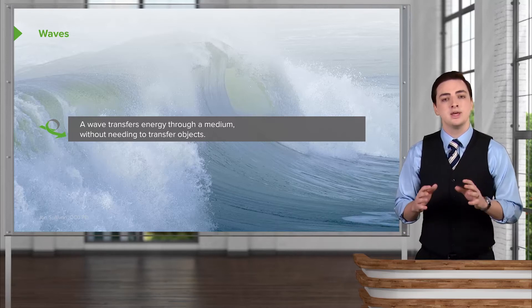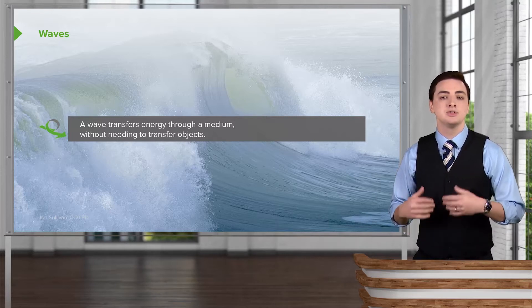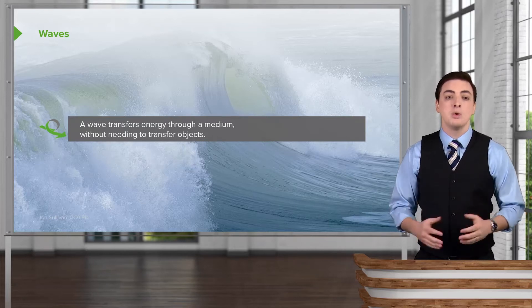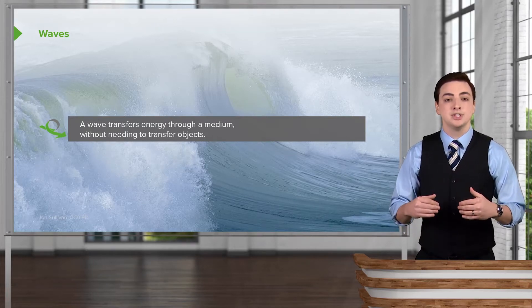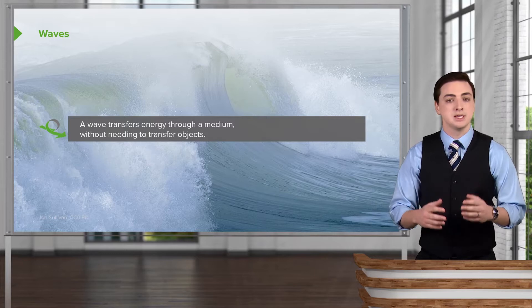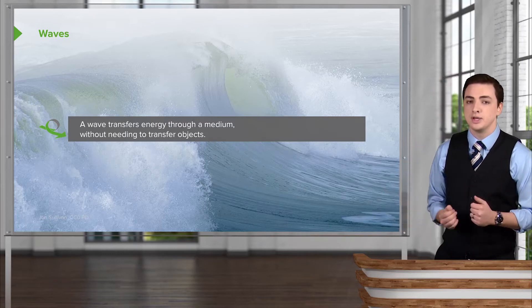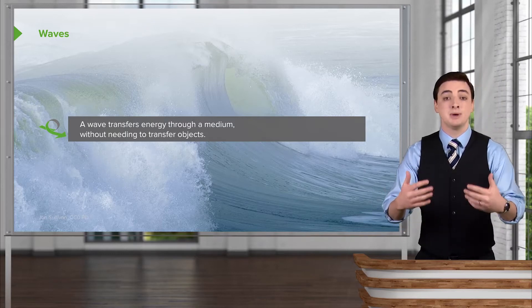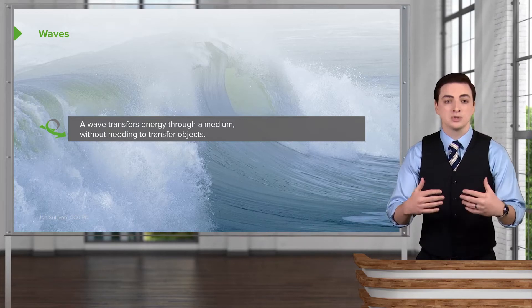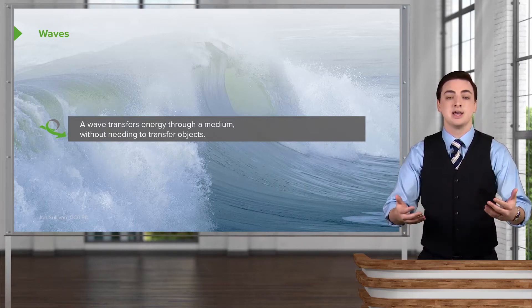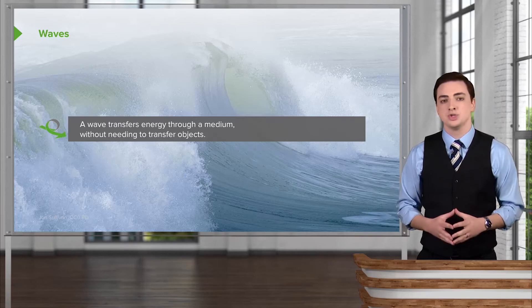A wave is a way of transferring energy without having to actually move objects themselves. What we do is say that the energy transfers through some medium. So for example, in an ocean wave, the energy from deep out in the ocean is moving in towards the shore without the water from deep out into the ocean having to actually move itself to the shore.